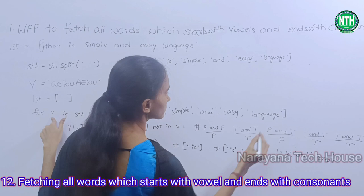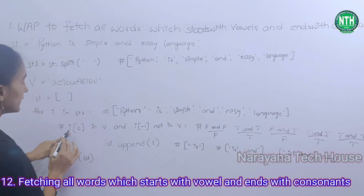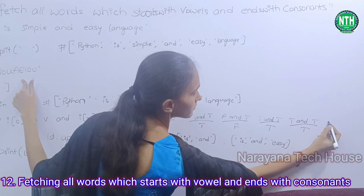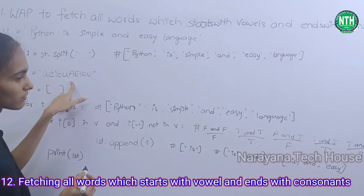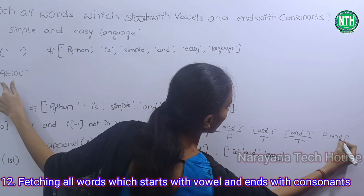Next, i value is 'language'. i[0] = 'l' — is 'l' in V? False. And i[-1] = 'e' — 'e' not in V? False. False and false becomes false, so there is no appending.